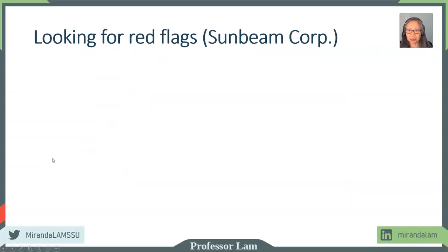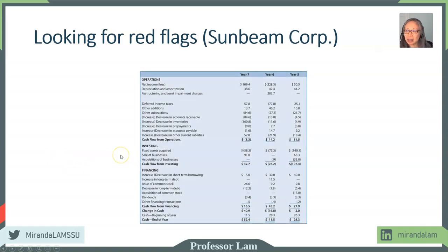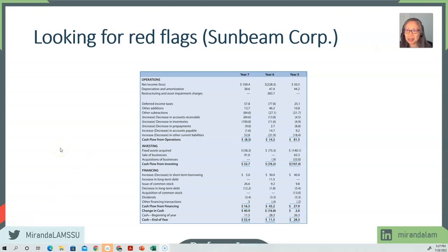Now let's put all this together by looking at Sunbeam Corporation. We're going to look at the statement of cash flows and see whether we can detect patterns and red flags. Without the income statement, we can see that both accounts receivable and inventory are decreasing, which suggests a hypothesis that sales is also decreasing — and if you look at the income statement, you would confirm that yes, sales is decreasing.